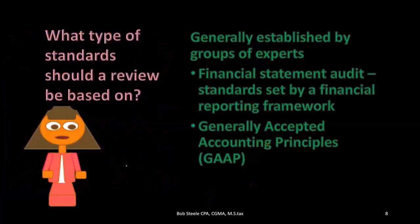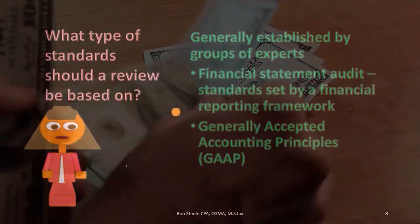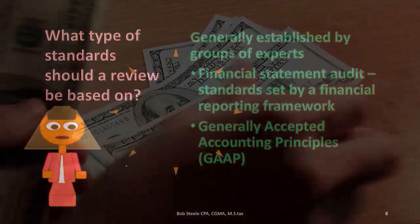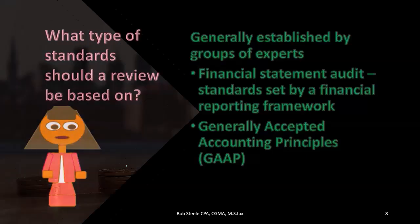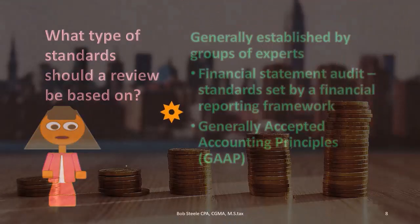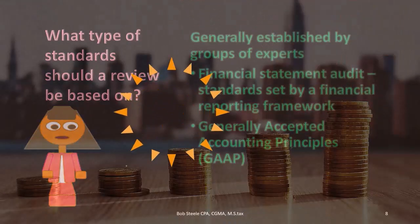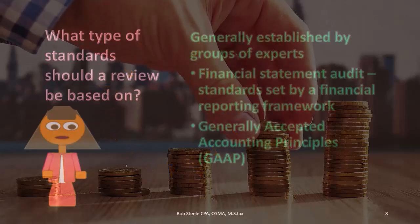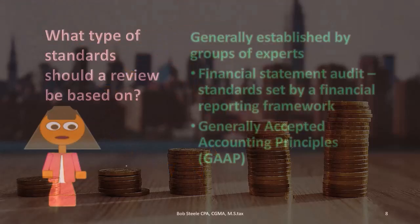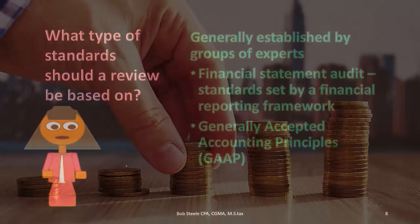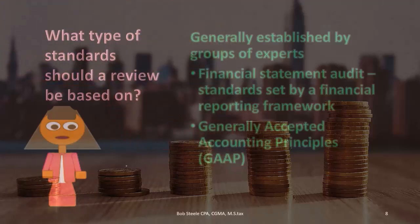Now, we could have other standards — other financial reporting frameworks that we're looking at. For example, if you're getting a loan from the bank and the bank is willing to accept a cash basis or financial statements in accordance with the tax code, then that might be good enough. We might be reviewing this in relation to the financial reporting framework of the IRS tax code or a cash basis.